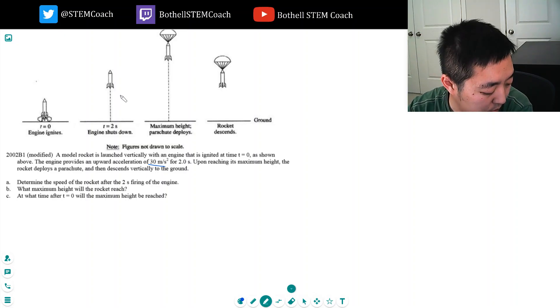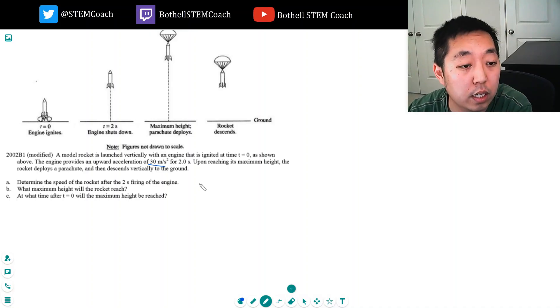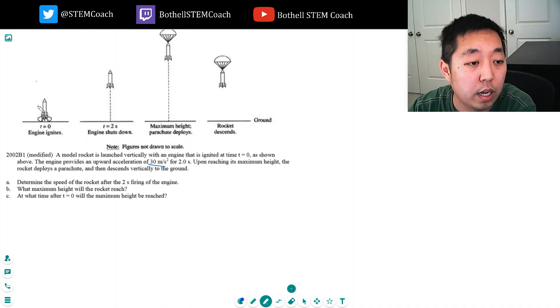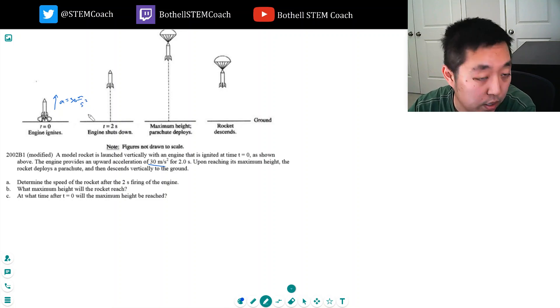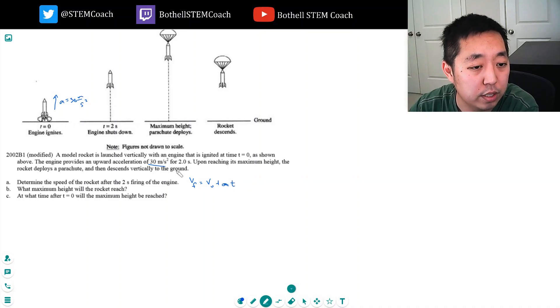So I'm accelerating up here at 30 meters per second squared. Its velocity starts at zero, so the kinematic equation I want is VF equals V0 plus acceleration times time, because it's under constant acceleration, this number here for two seconds. It starts off at zero because the rocket isn't moving, so it's 0 meters per second plus 30 meters per second squared times 2 seconds. That's 60 meters per second.